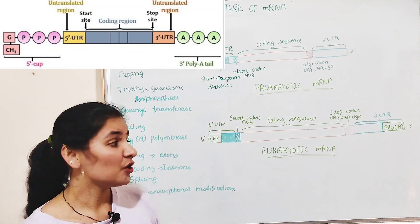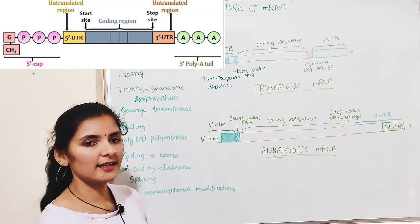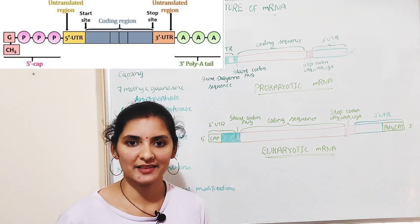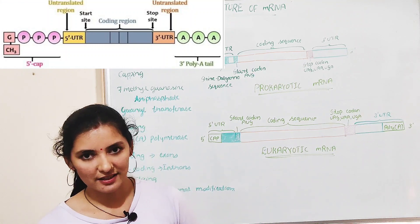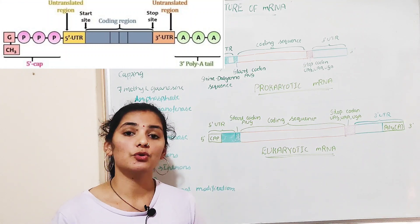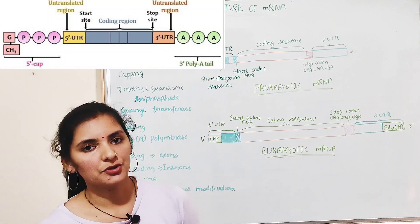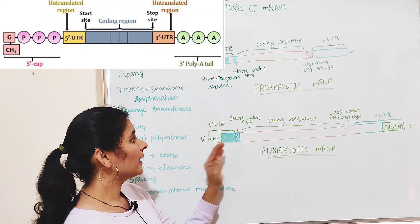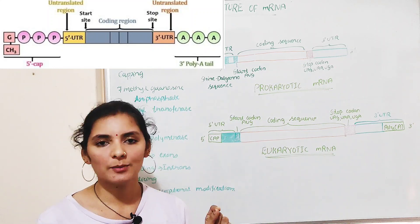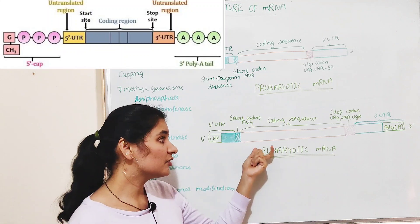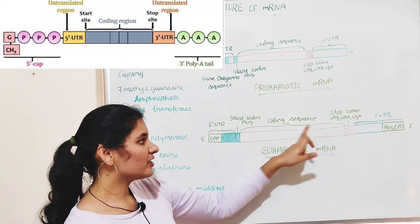Following the 5' cap is the 5' UTR region — the untranslated region. Eukaryotic mRNA also has a 5' UTR, or 5' untranslated region. It is a region that is not translated during translation or protein synthesis, so although it consists of a sequence of nucleotides, it will not be translated during protein synthesis.